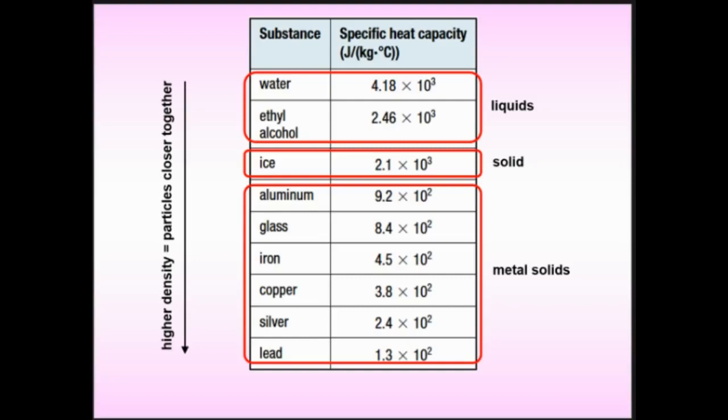The division of water's specific heat capacity by iron's was about 9.2. What does that mean? In the time it takes water to heat up by one degree, iron has heated up by 9.2 degrees. So metals in general are much easier to heat up. Less energy is needed to heat up denser, closely packed solids.